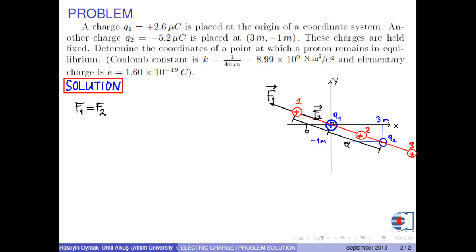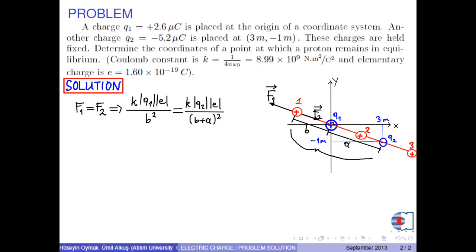F1 is given by K times |Q1| times |e| over B². And the magnitude of F2 is K times |Q2| times |e| over (A + B)².